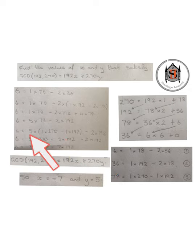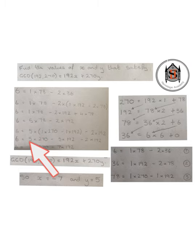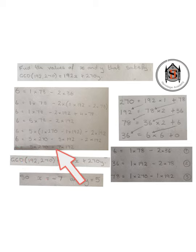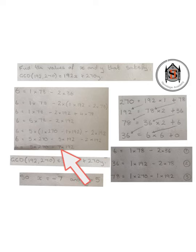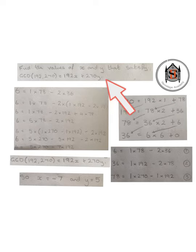Substituting in gives: 6 equals 5 times (1 lot of 270 minus 1 times 192) minus 2 lots of 192. Tidying up: 6 equals 5 times 270 minus 5 times 192 minus 2 times 192, which simplifies to 6 equals 5 times 270 minus 7 times 192. This equation is now in the form we wanted — the greatest common divisor 6 equals 192 times a number plus 270 times another number.